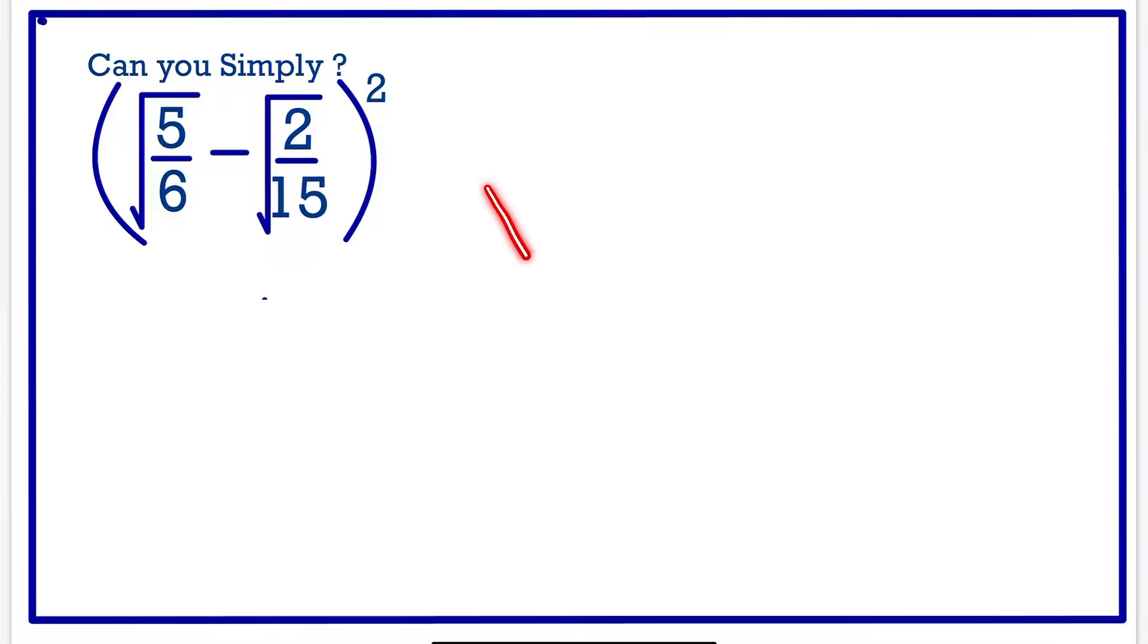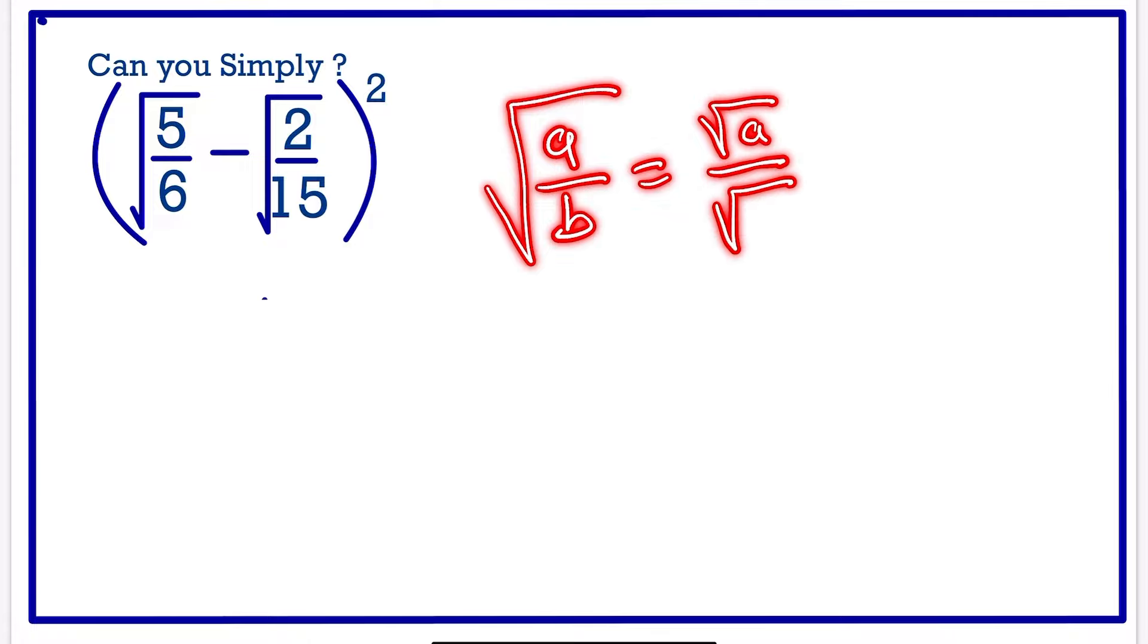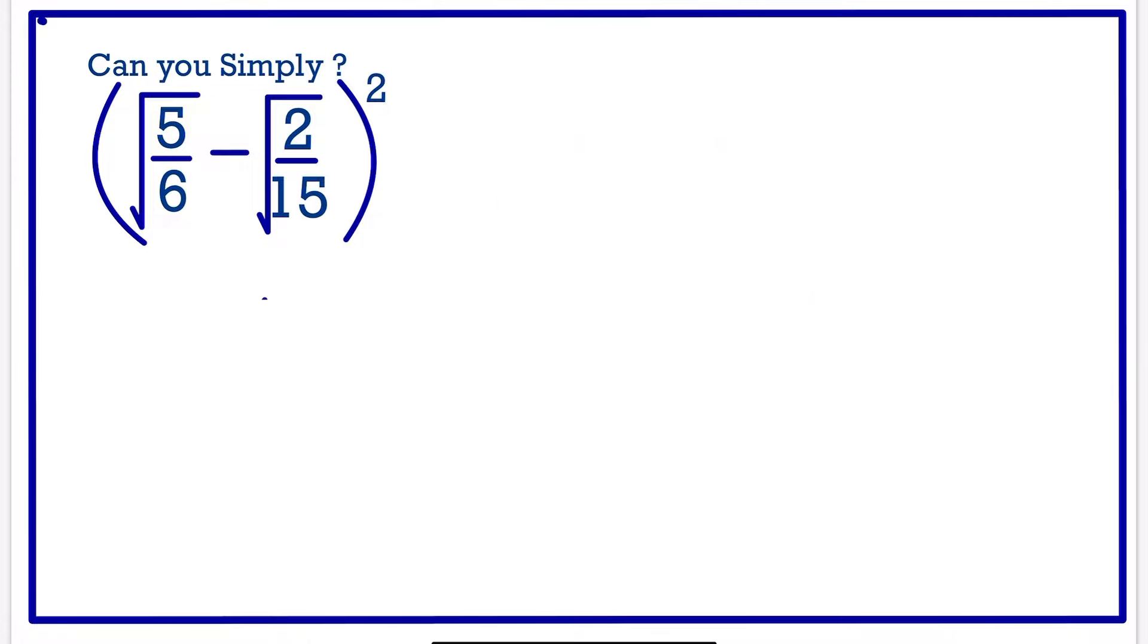If we have the square root of A divided by B, it's the same as the square root of A divided by the square root of B. We are going to apply this law.